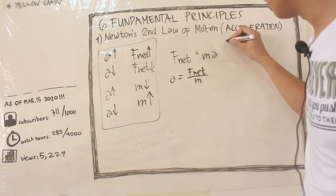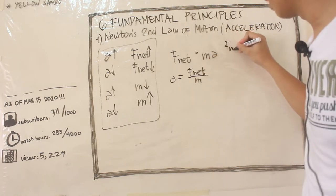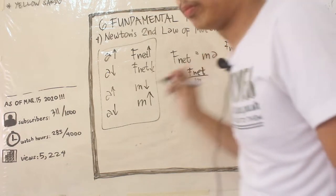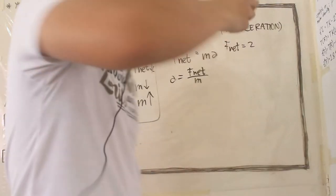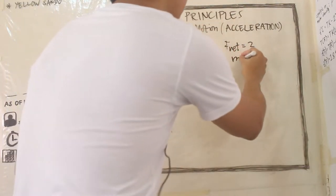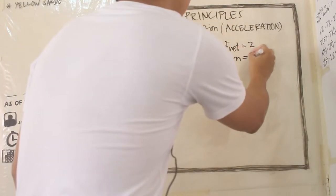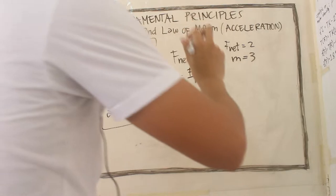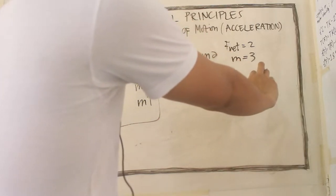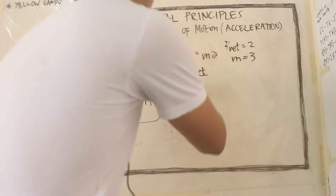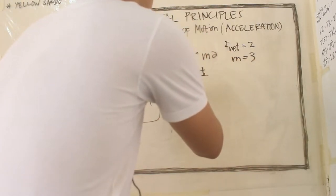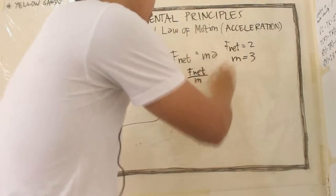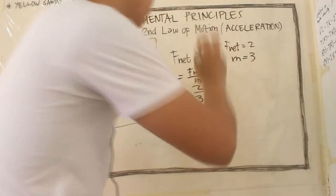Let us set values. For instance, yung F_net natin is equal to 2, tsaka yung mass natin is equal to 3. So, A natin is 2/3, which is equal to 0.66 repeating.